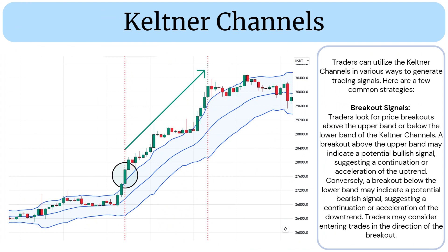Traders can utilize the Keltner Channels in various ways to generate trading signals. Here are a few common strategies. Breakout Signals: Traders look for price breakouts above the upper band or below the lower band. A breakout above the upper band may indicate a potential bullish signal, suggesting a continuation or acceleration of the uptrend. Conversely, a breakout below the lower band may indicate a potential bearish signal, suggesting a continuation or acceleration of the downtrend. Traders may consider entering trades in the direction of the breakout.